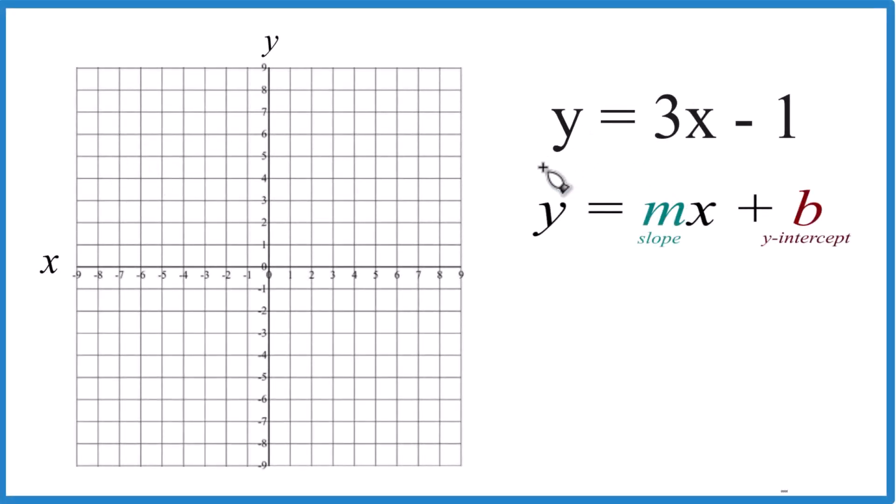Let's graph this equation here. We have y equals 3x minus 1, and we're going to use slope-intercept form. If you need help with a table of values, there's a link in the description and at the end of this video.